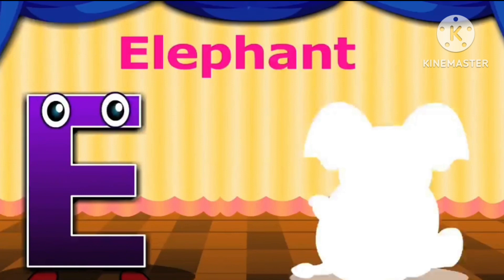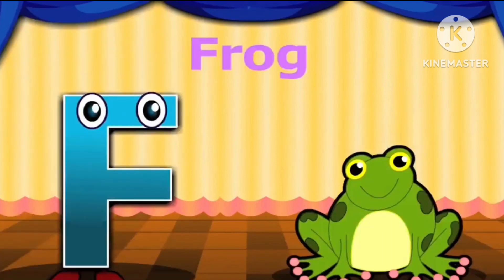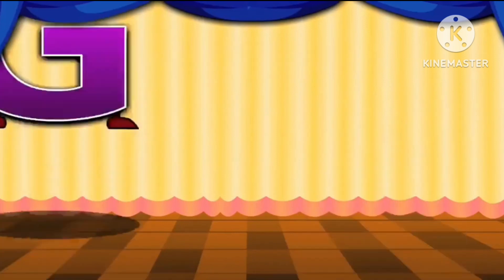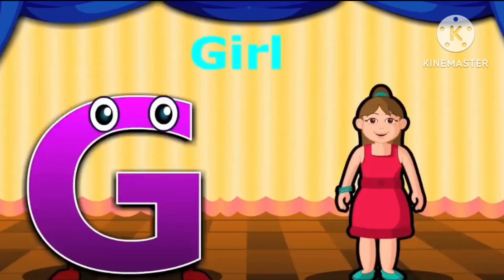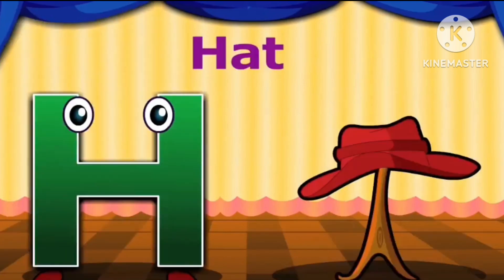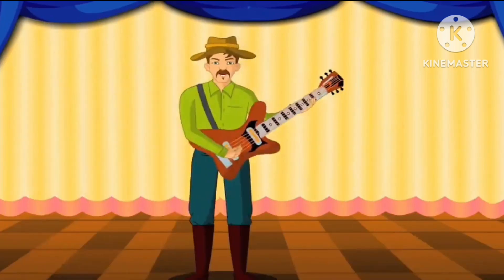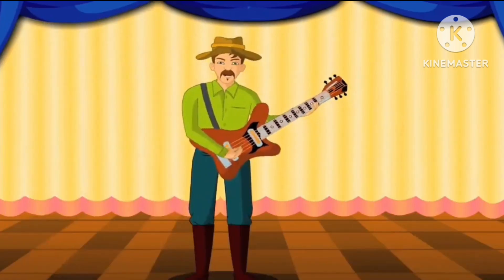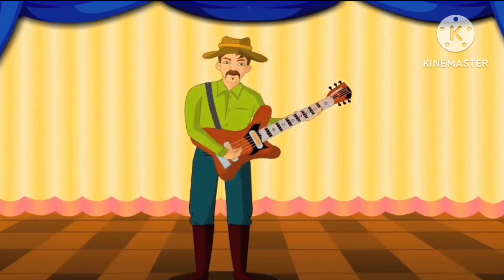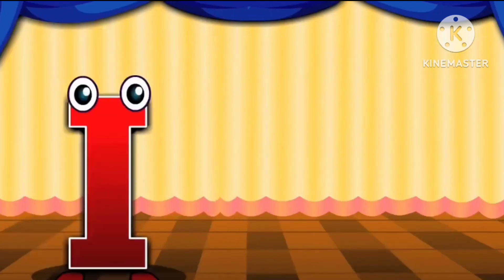E is for elephant. F is for frog. G is for girl. H is for hat. Let's sing the phonic song, you come and sing along.